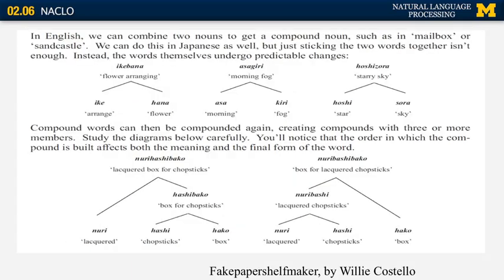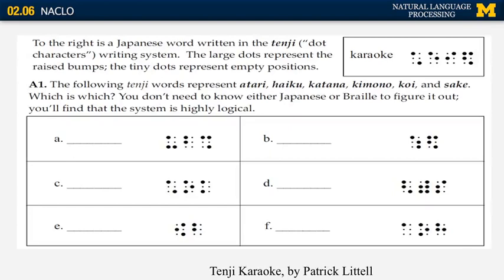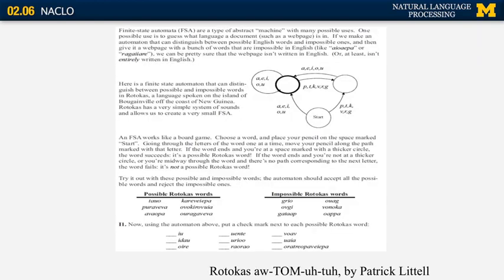Here's one about Japanese noun compounds from 2008. Here's one about aligning texts from two different languages — in this case, Swedish and Norwegian from 2009. This is one about a writing system for the blind in Japan called Tenji; you have to figure out how those characters, which are similar to Braille in English, are used. This is a more computational example about using finite state automata to understand how words in the language called Rotokas, from the coast of New Guinea, are formed.